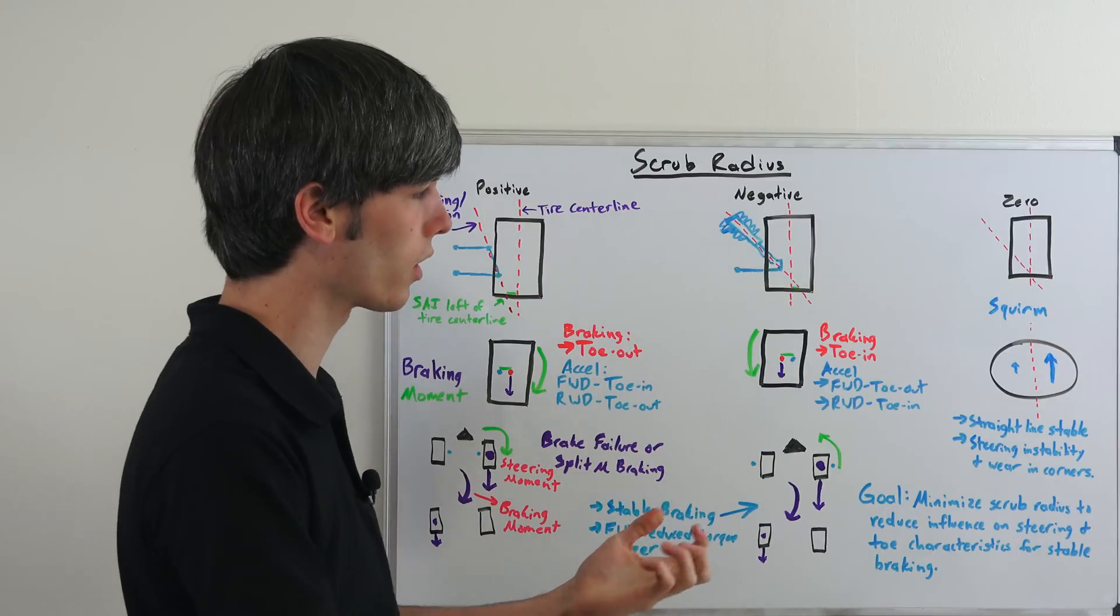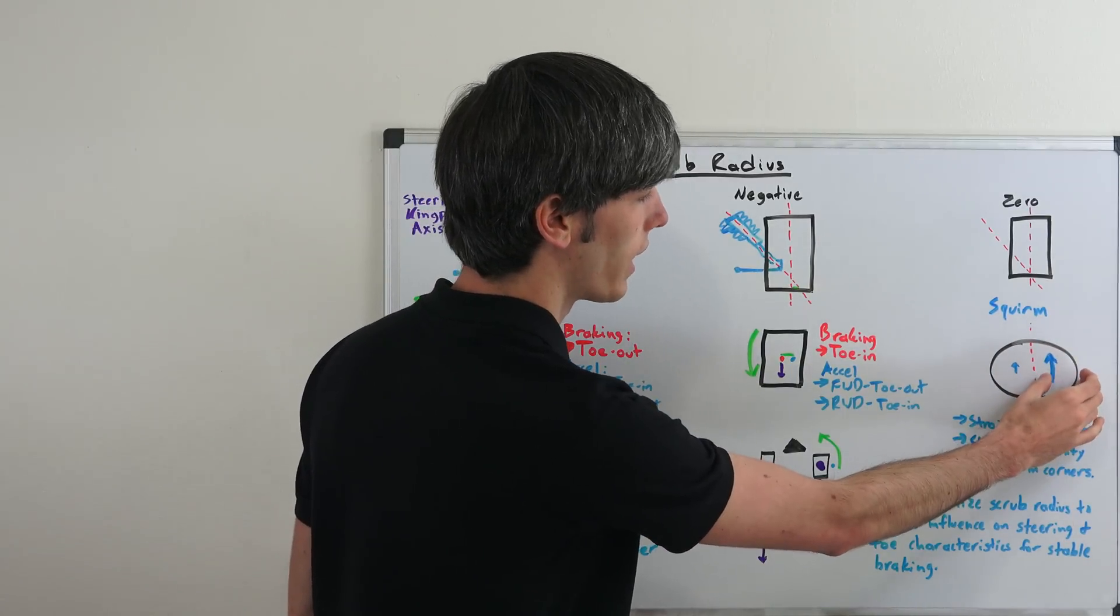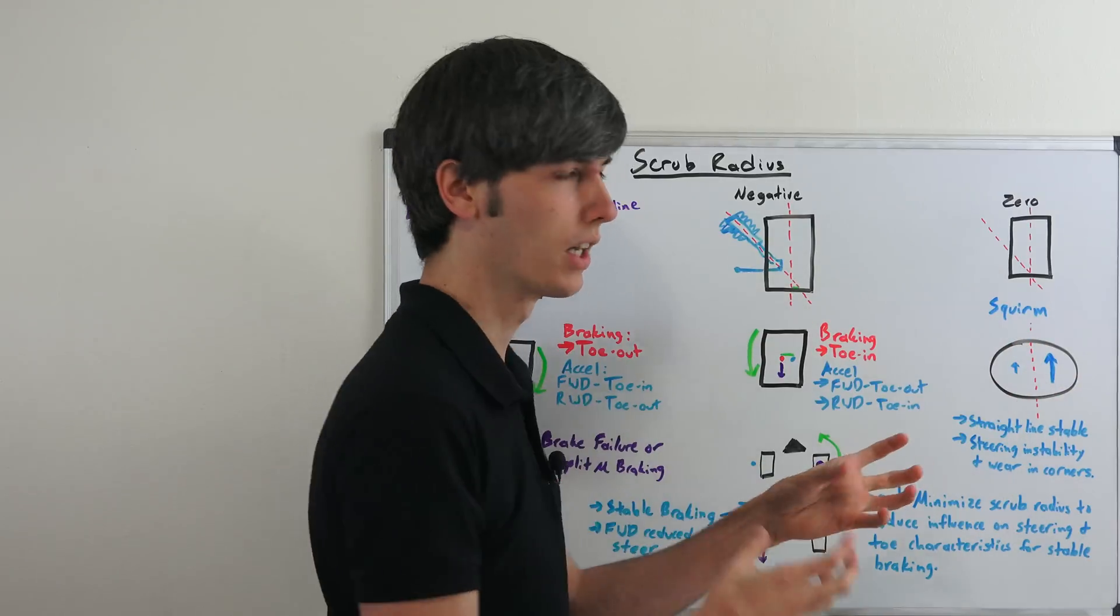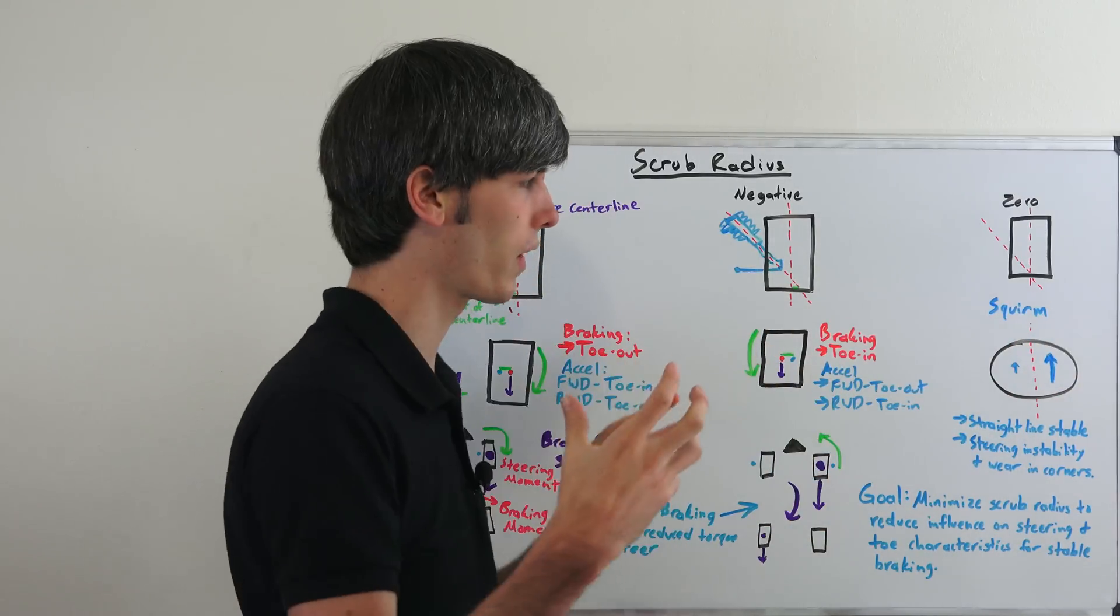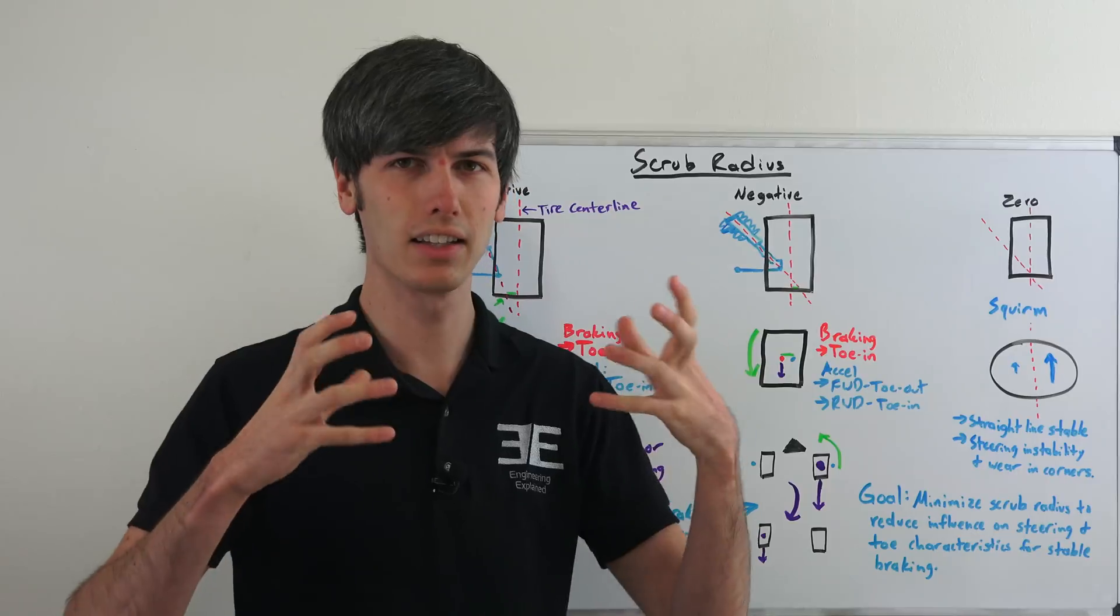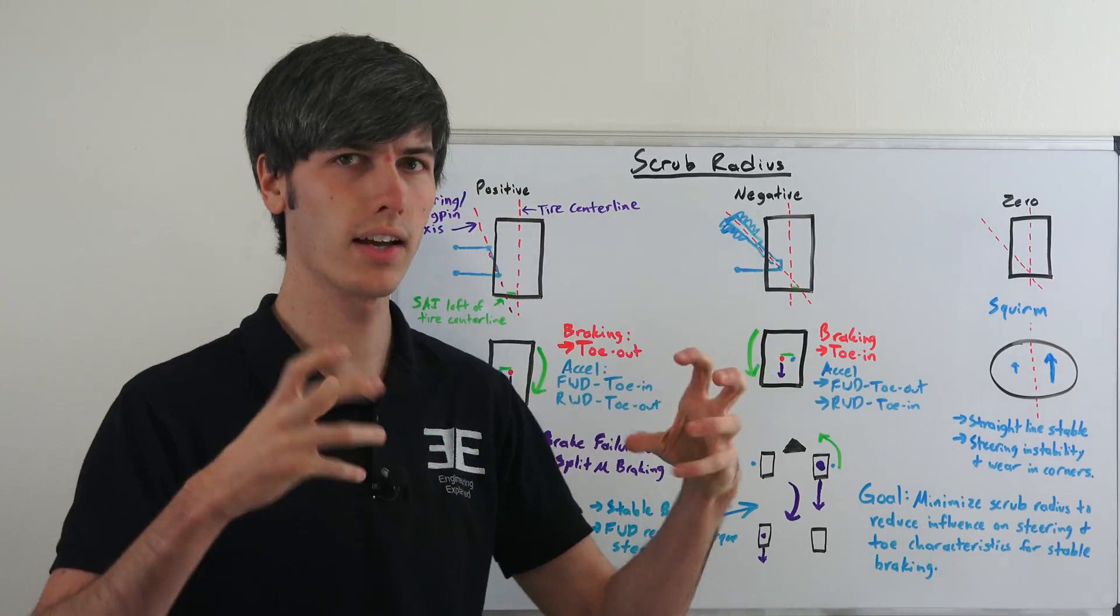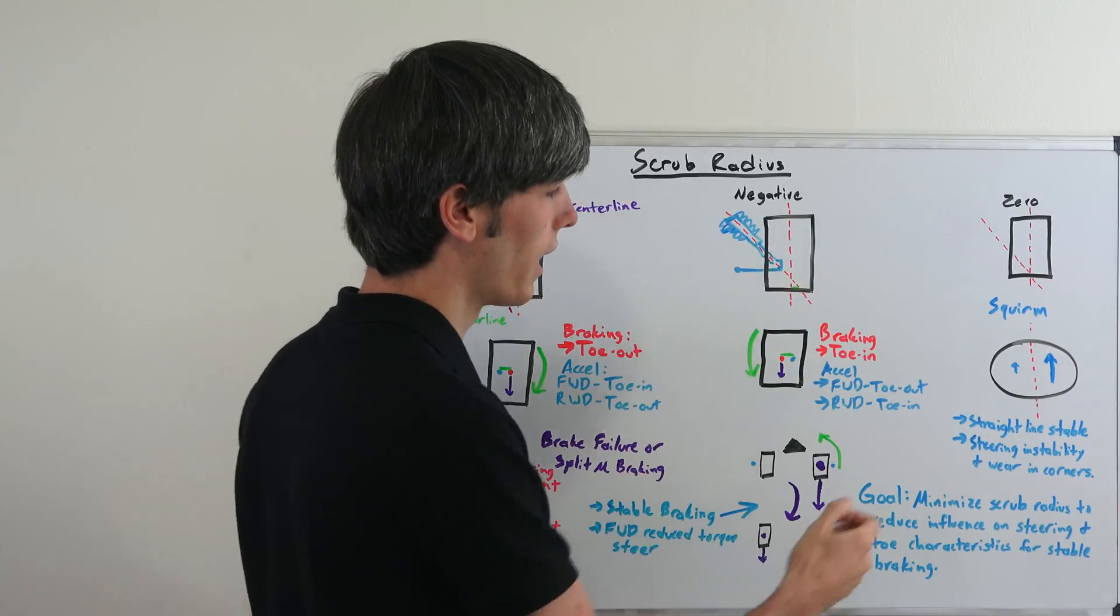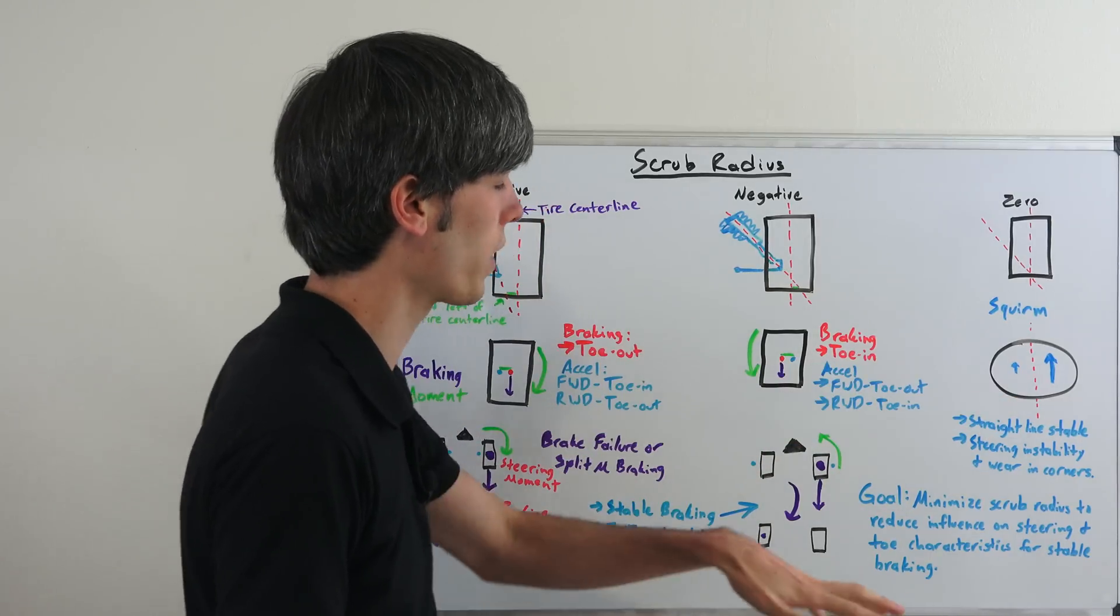But in a corner what can happen is you can have a little bit of steering instability because essentially the right side is moving faster than the left side. You've got almost even distribution here, but the right side wants to move faster than the inside. And so it's kind of like a lock differential in that sense where the outside wants to move faster than the inside. And so you have a little bit of squirm and it can cause some instability in the steering wheel and it can also cause a little bit of additional wear.